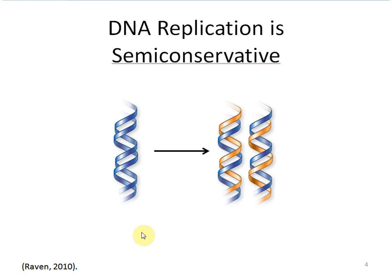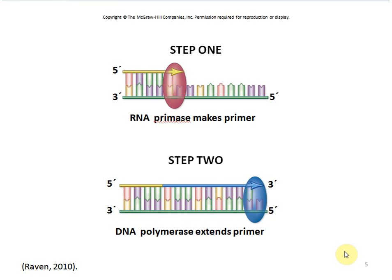Replication is a very fast process. The very first step is the addition of an RNA primer — these are RNA nucleotides rather than DNA nucleotides. RNA nucleotides are much less stable than DNA nucleotides. The reason this primer must be added is that DNA polymerase can't start attaching nucleotides without something to hold on to. RNA primase adds this RNA primer so DNA polymerase can hold on and begin making the DNA strand.